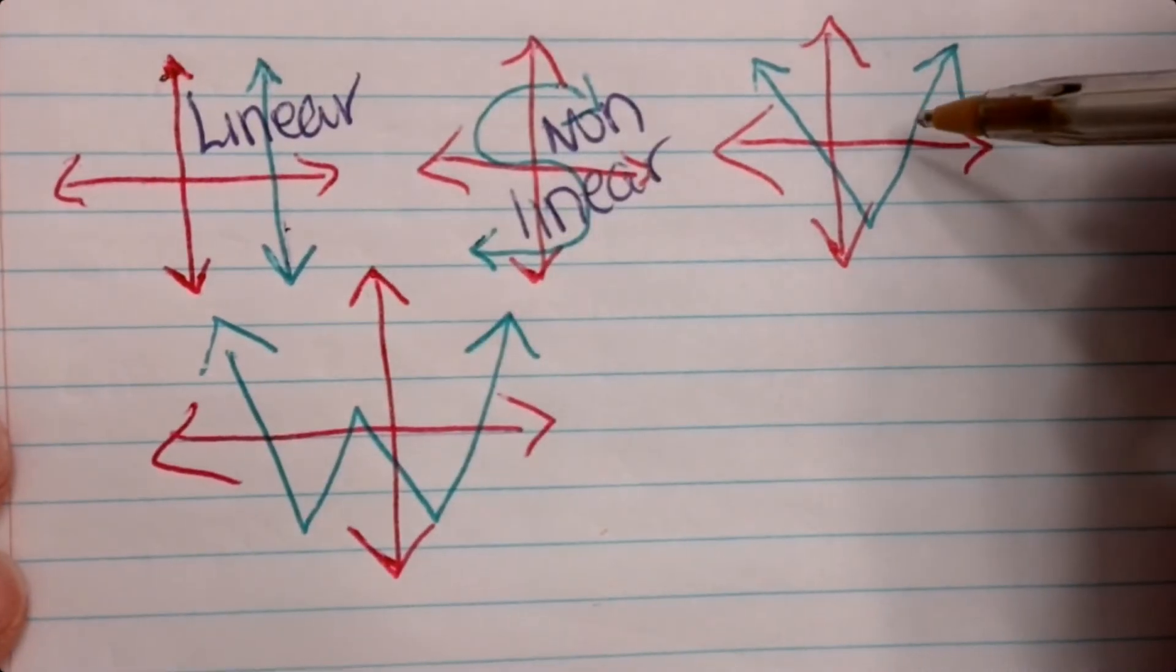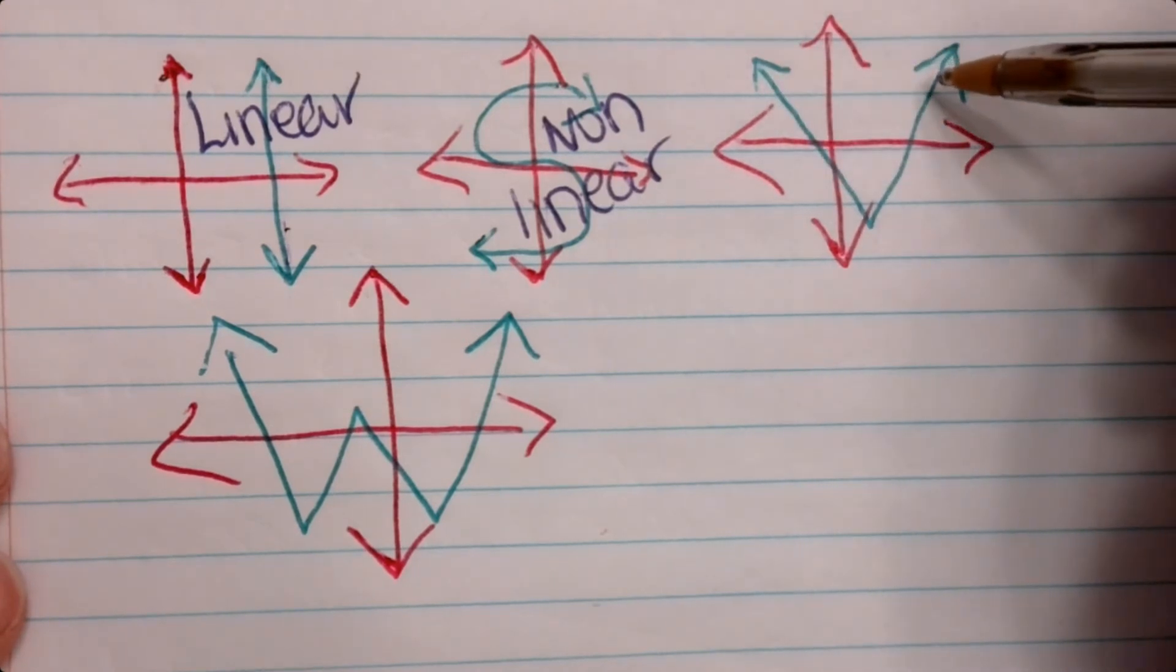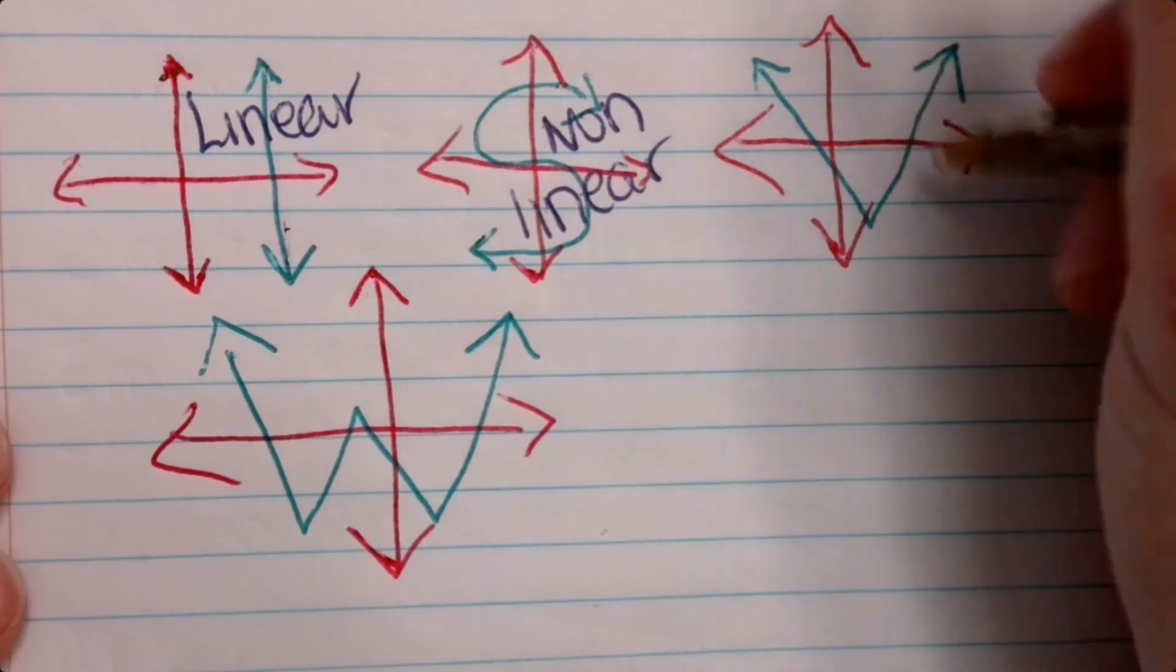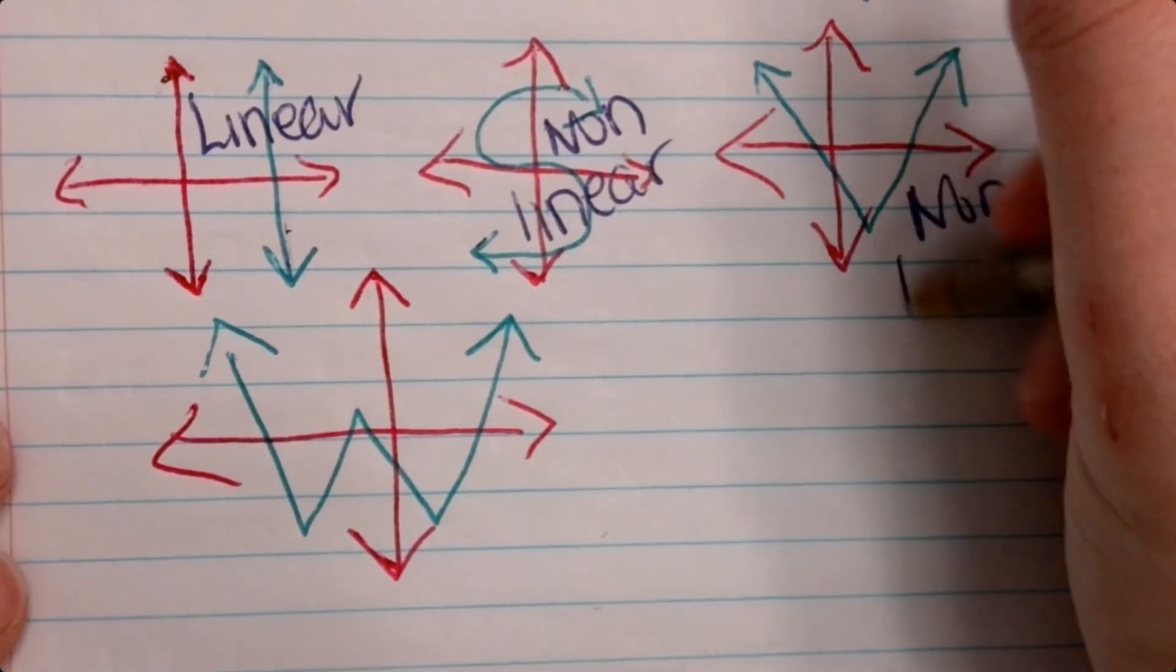The V does have straight lines. However, it's two straight lines. I would have to lift up my ruler to recreate this, meaning it is non-linear.